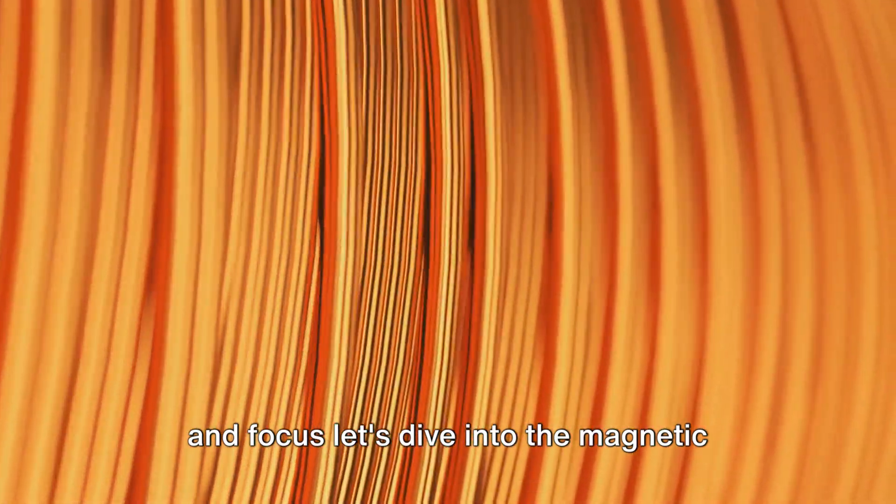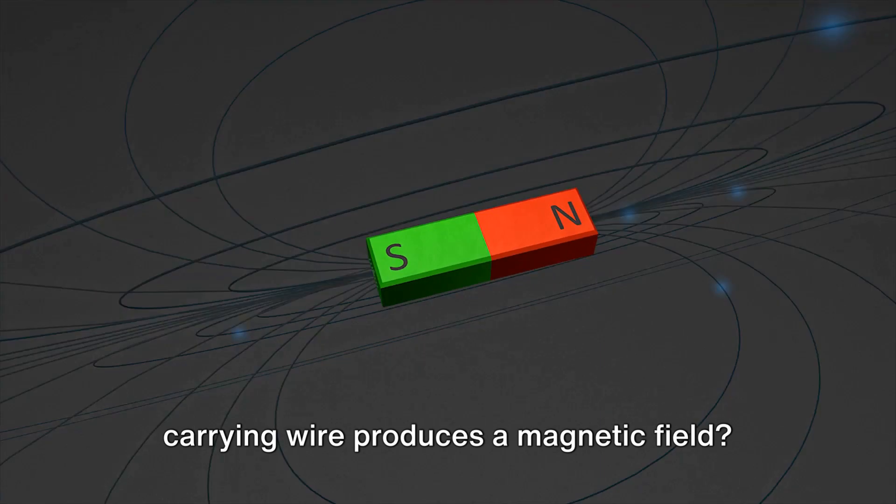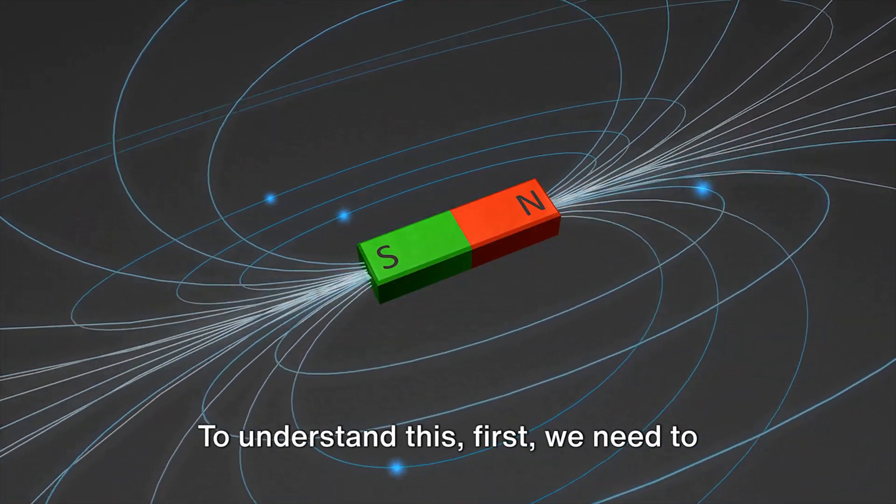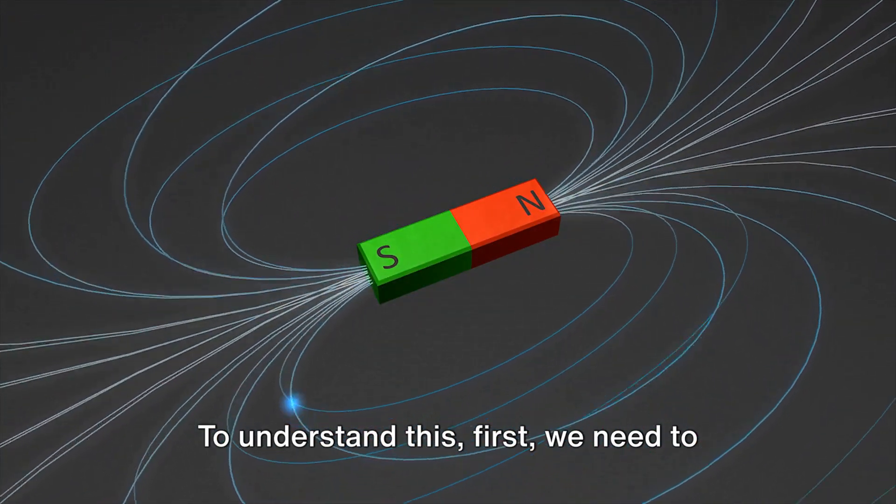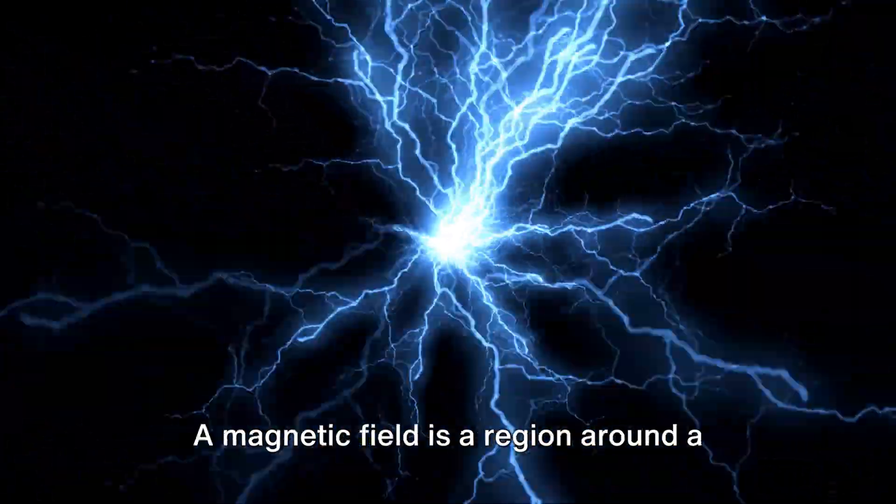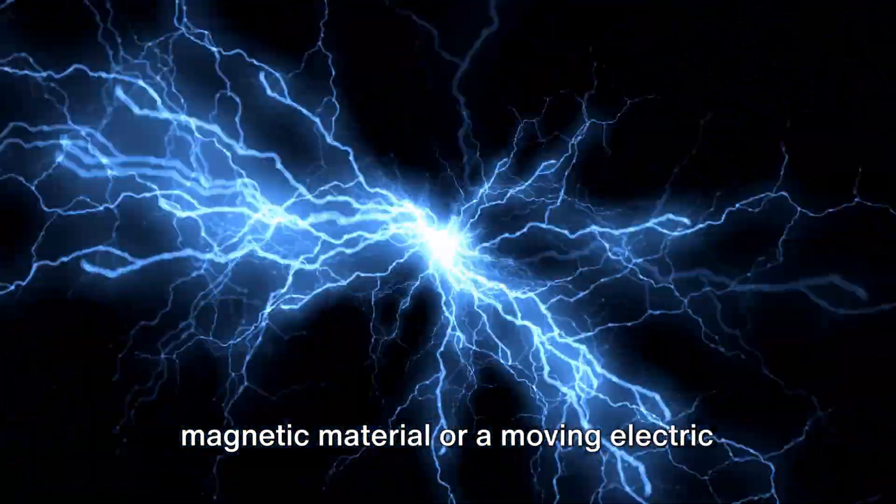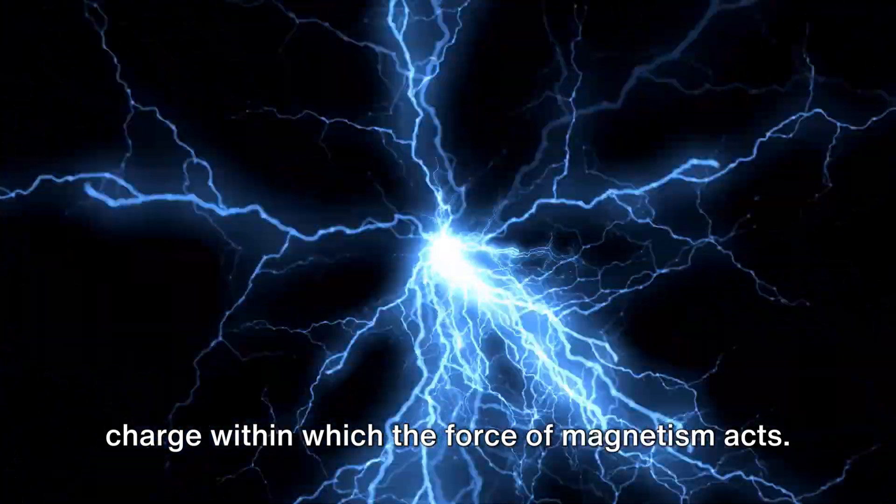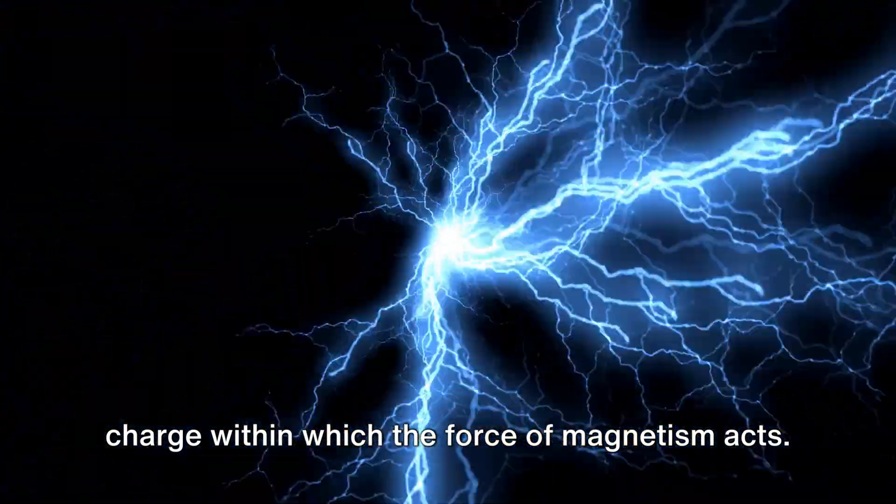Let's dive into the magnetic marvels of the current carrying wire. Have you ever wondered how a current carrying wire produces a magnetic field? To understand this first, we need to define what a magnetic field is. A magnetic field is a region around a magnetic material or a moving electric charge within which the force of magnetism acts.